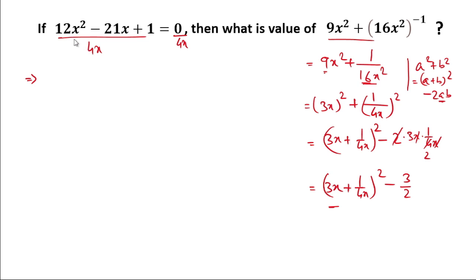Now we'll simplify this expression. 12x² divided by 4x: here x and x get cancelled, and 12 divided by 4 is 3, so it will be 3x.